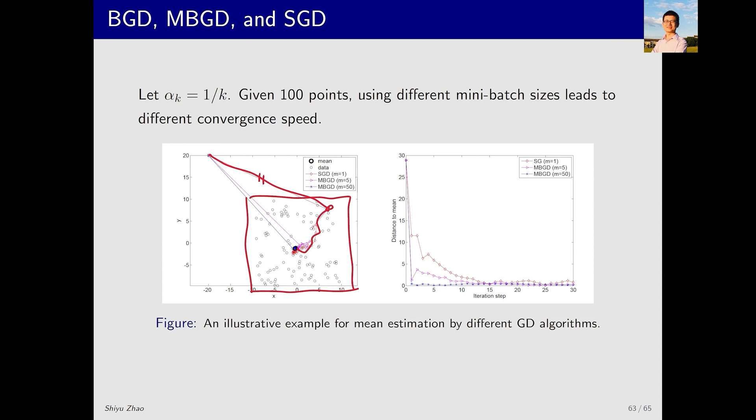The purple and blue lines represent mini-batch gradient descent with different batch sizes. The purple line corresponds to a smaller batch size of 5 and the blue line corresponds to a batch size of 50. You can observe that the purple line converges faster than SGD, directly approaching the target and then gradually converging to the mean. The blue line, on the other hand, converges even faster, getting very close to the target mean.